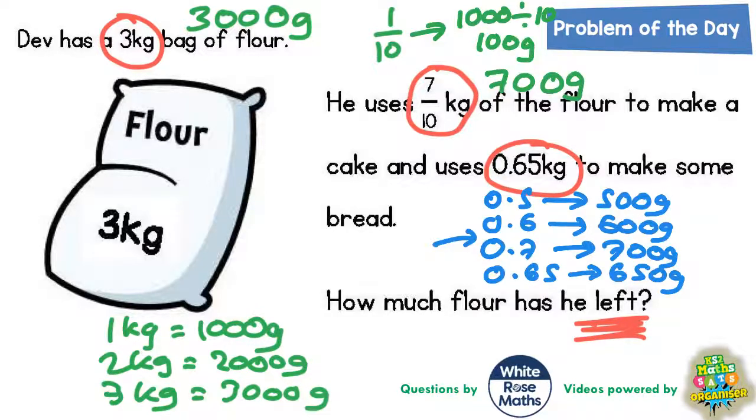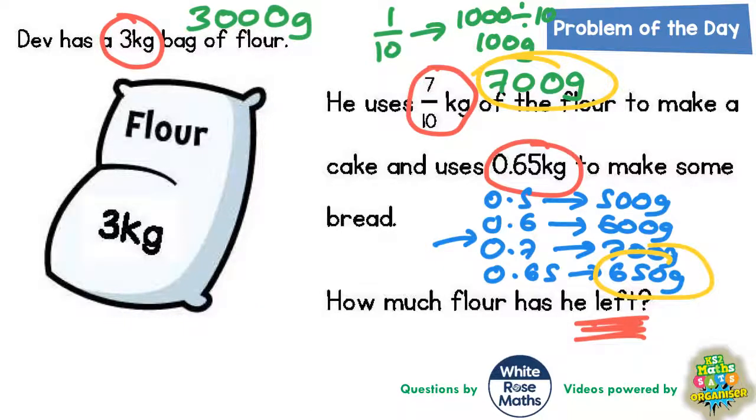So he's basically using 700g to make the cake and he's using 650g to make some bread. So how much does he have left? Well, if we figure out what he's used so far, that would be 700g for the cake plus 650g for the bread. So let's add that together.